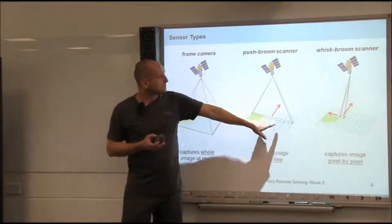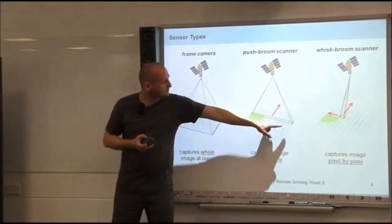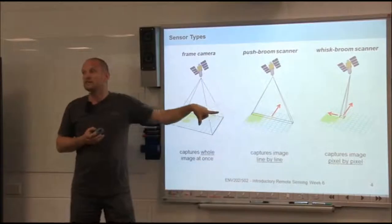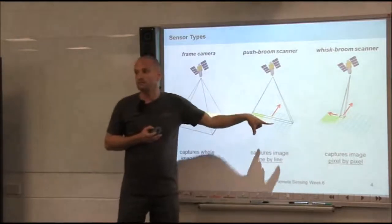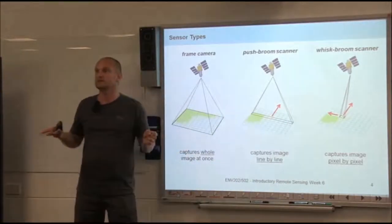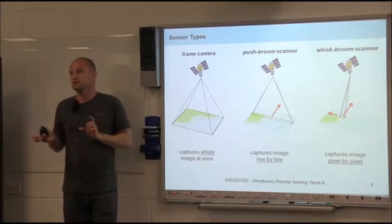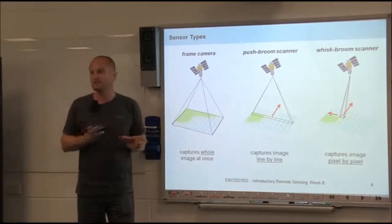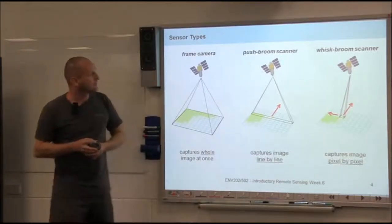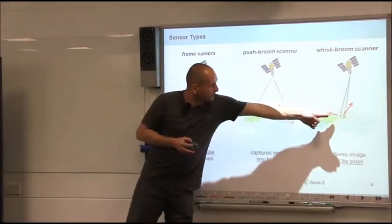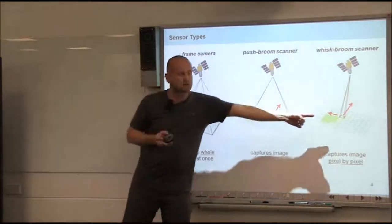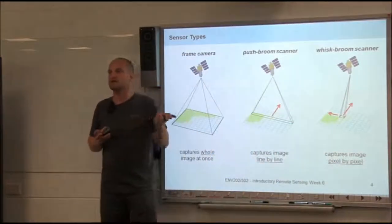That's why the tendency goes towards push-broom. It also has another advantage because it has a sensor for every single pixel. That means each sensor looks at that pixel for a longer time, because they don't have to cover the whole line. On the other hand, if you have multiple sensors, they're all slightly different, so you have to calibrate them very well so they really see the same thing and have the same sensitivity. The problem of different sensitivity is not an issue with whisk-broom, but you have that mechanical scanning issue.